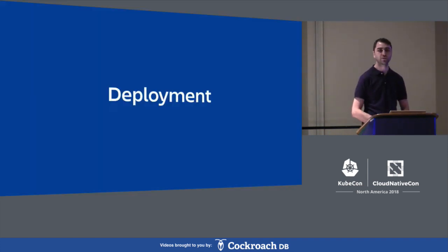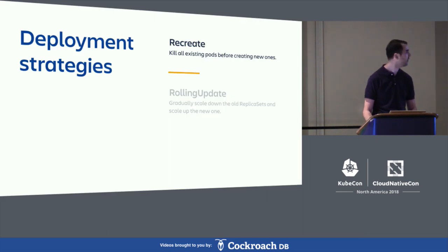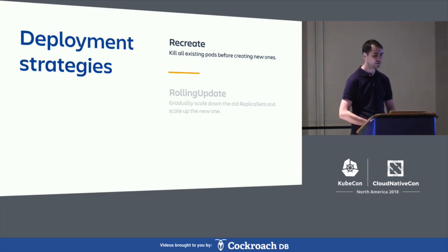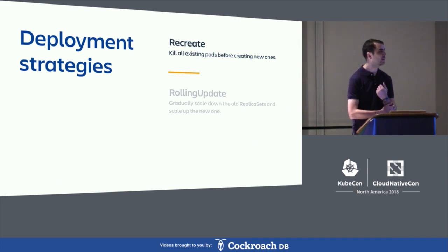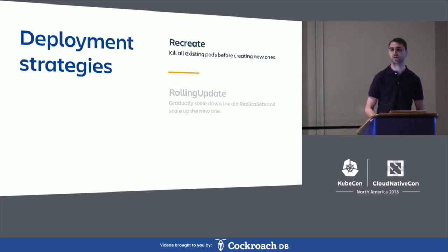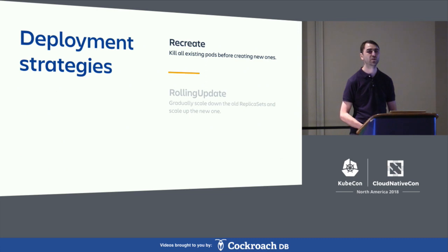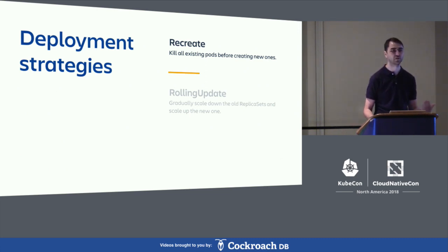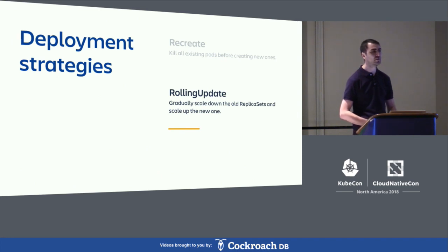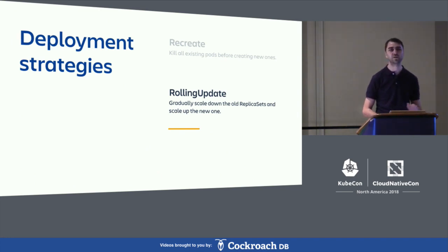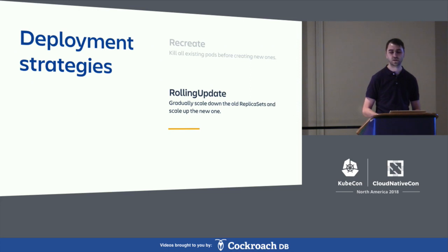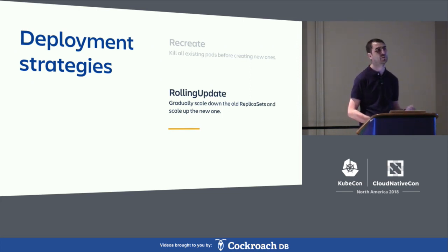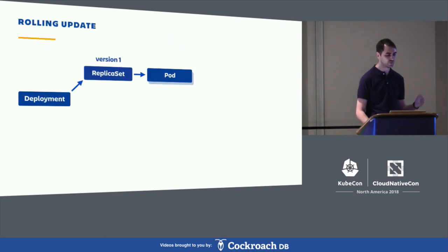Let's talk about Kubernetes deployments. The way to deploy applications in Kubernetes is using the Kubernetes Deployment resource, which has two update strategies: recreate and rolling update. The recreate strategy kills all existing pods before creating new ones. It's mostly useful for worker nodes, and not as useful for user-facing applications which have endpoints. The rolling update strategy is the default — if you don't specify a rollout strategy in your deployment spec, this is the strategy you'll get.